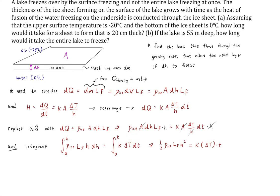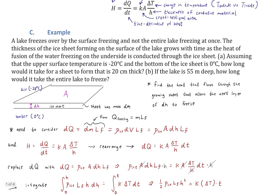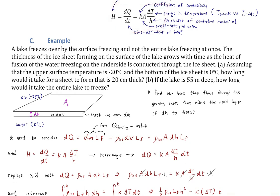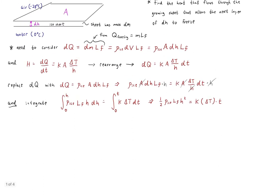Evaluating the integrals: the left side gives ½H², and the right side gives T. We now have one step before a functional form — just isolate to get T as a function of H. This is a relationship derived purely from the principles of physics and calculus, not a formula typically looked up in a table.